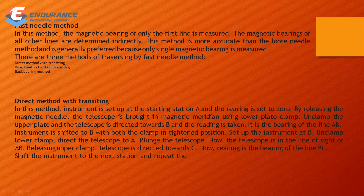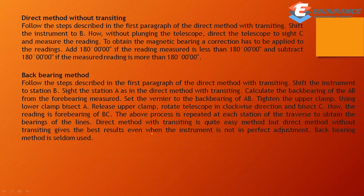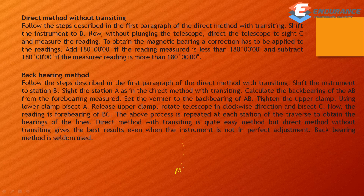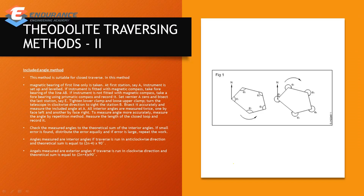There are three methods of traversing: Direct method with transiting, direct method without transiting, and back bearing method. For theodolite traversing, you can use the included angle method. You can use the closed traversing method where in the first line you use the magnetic bearing.